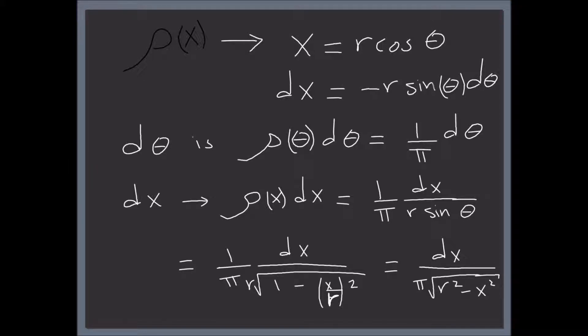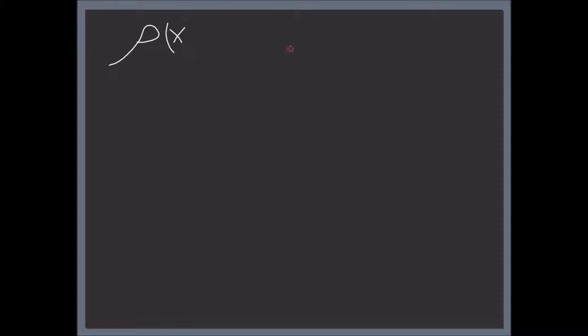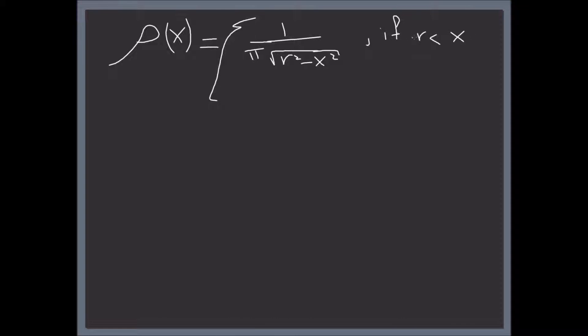So finally, the probability density ρ(x) equals 1 divided by π times the square root of r² − x², if x is between −r and r, and it's 0 otherwise.